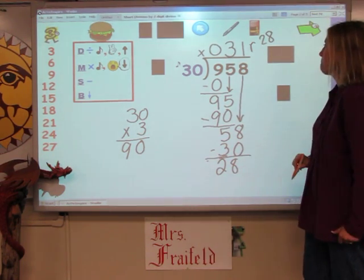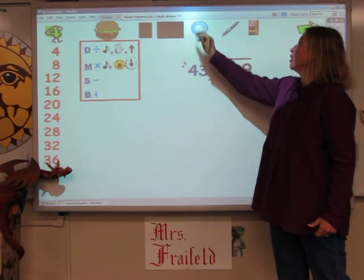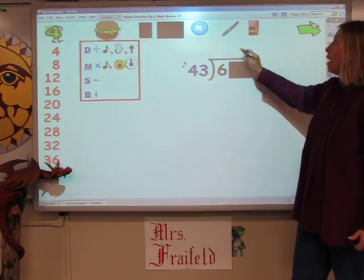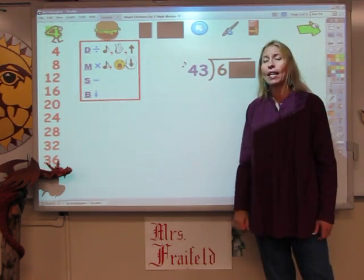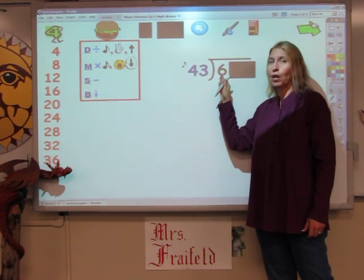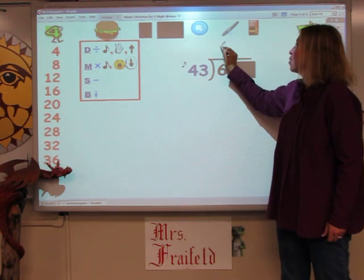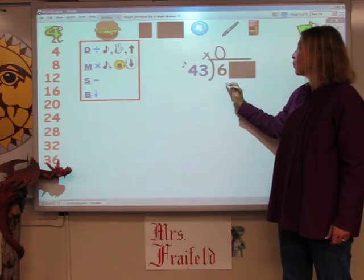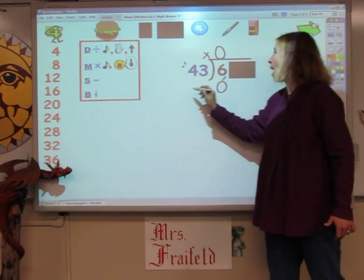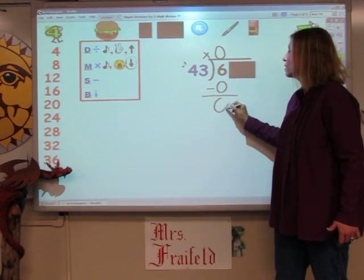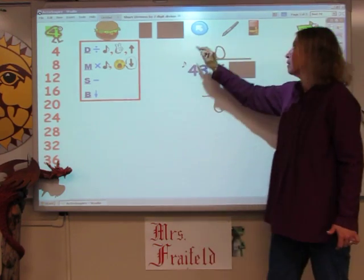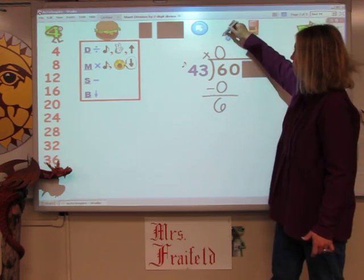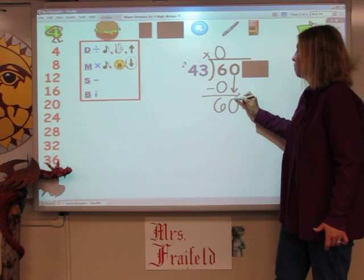Let's try it again. Again, looking kind of scary. The first thing I'm going to do is cover up everything but the number I'm working with. I'm going to ask myself: how many groups of 43 can I get out of 6? If this number is bigger than that number, you can't get any groups. So I'm going to write a 0 at the top. My next step is to multiply — 0 times 43 is 0. My next step is to subtract — 6 minus 0 is 6. And my next step is to bring down. I uncover the next number, and down it goes. It's 60.